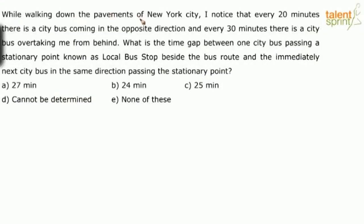While walking down the pavements of New York City, I noticed that every 20 minutes there is a city bus coming in the opposite direction and every 30 minutes there is a city bus overtaking me from behind. What is the time gap between one city bus passing a stationary point — a local bus stop beside the bus route — and the immediately next city bus in the same direction passing that stationary point?